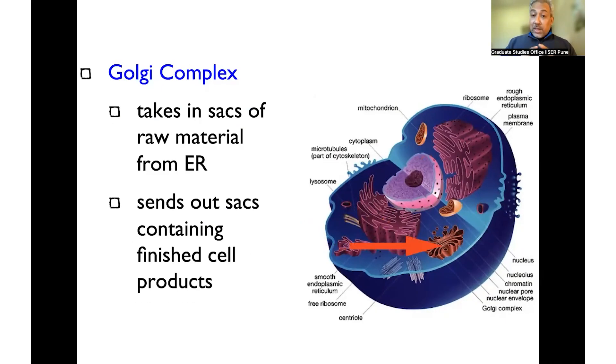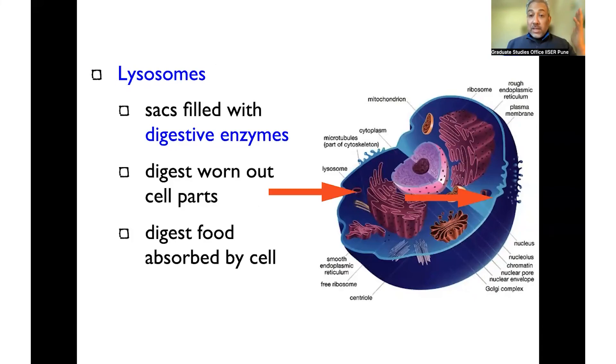We have the Golgi complex, which is a network of membranes that is present inside the cell, which we will discover works as a packaging and processing center inside the cell. And now allows things that are synthesized from the ER, proteins that are synthesized from the ER to be processed in such a way that before they can be delivered to different parts inside the cell, including the cell membrane.